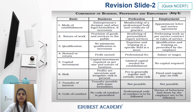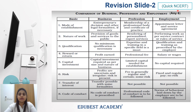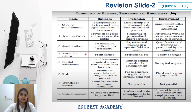The next slide is a comparison of business, profession, and employment. I have made a short form called 'quick NCRT' to remember the eight basis points. Q stands for qualification, N is nature of work, C is capital investment and code of conduct, R is establishment or mode of establishment, and T is transfer of interest. So all eight points can be remembered with just one word: quick NCRT.